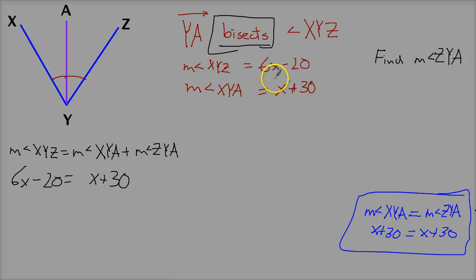But say they say one of them, XYA is X plus 5, and ZYA is X minus 4. Well, if they're supposed to be equal, I can go ahead and solve that equation to find the value for X.